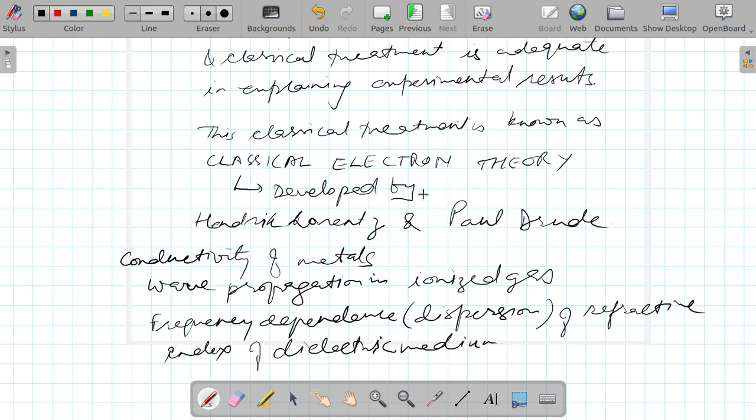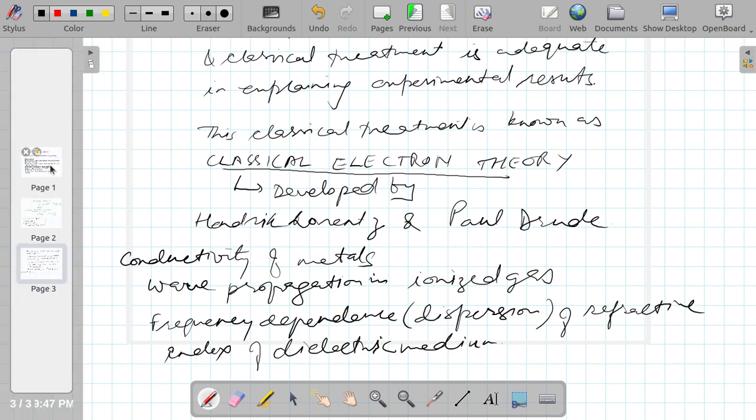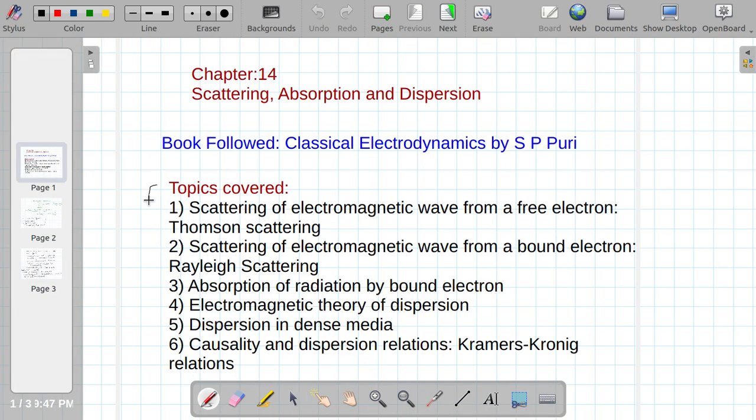These are the certain advantages of classical electron theory, and I will discuss these topics as I talked about in the beginning of the lecture. Thanks for watching this video. In the next video I will talk about scattering of electromagnetic waves from free electrons, which is known as Thomson scattering.